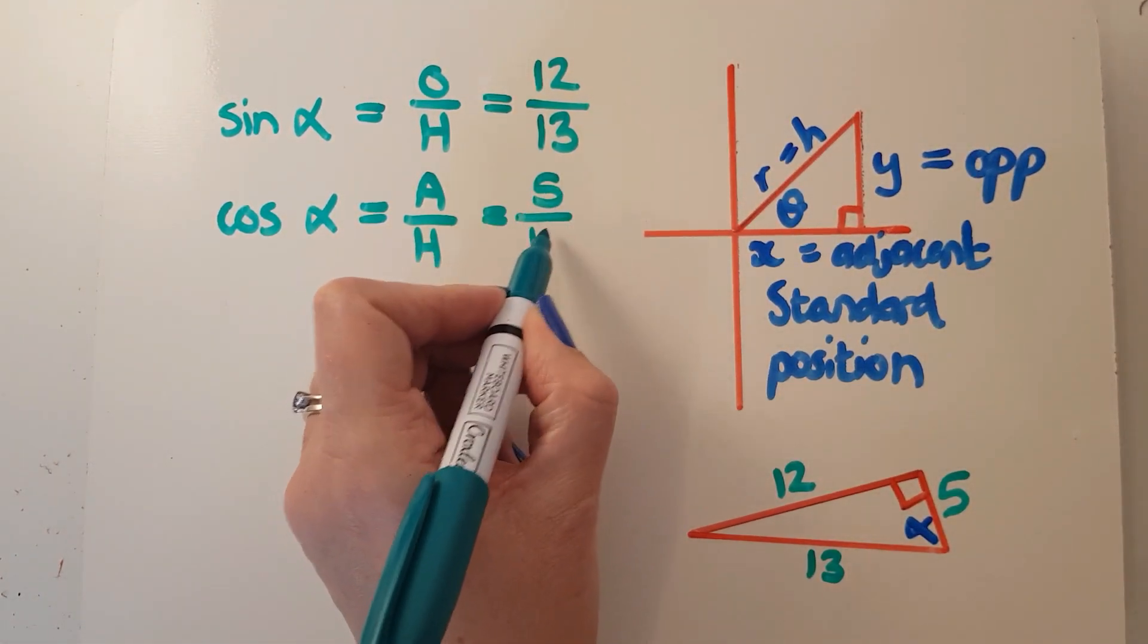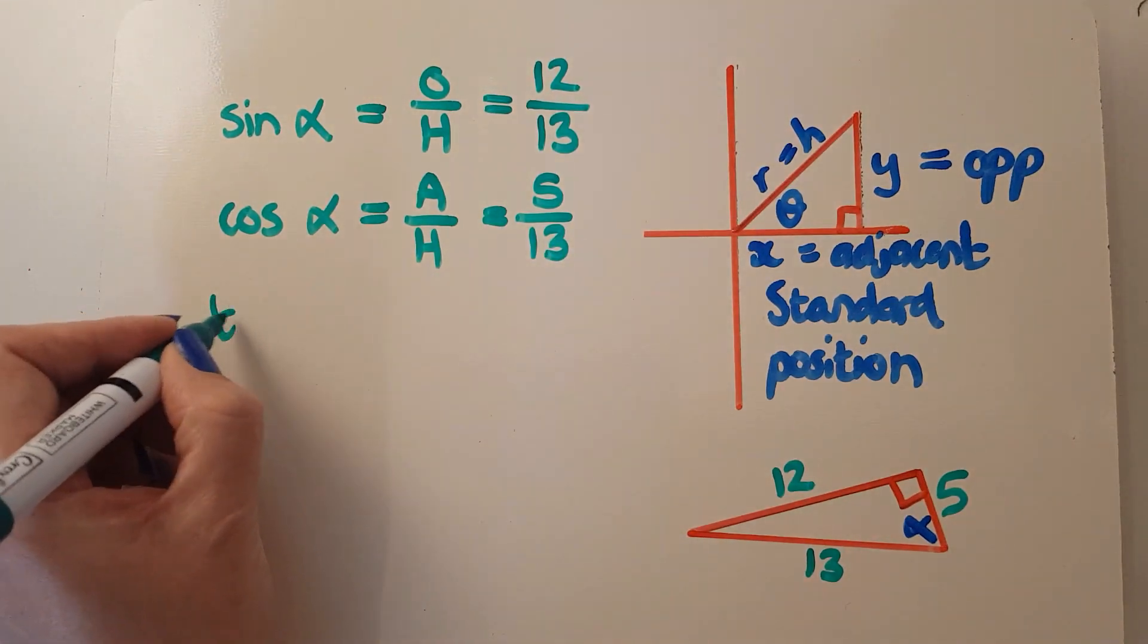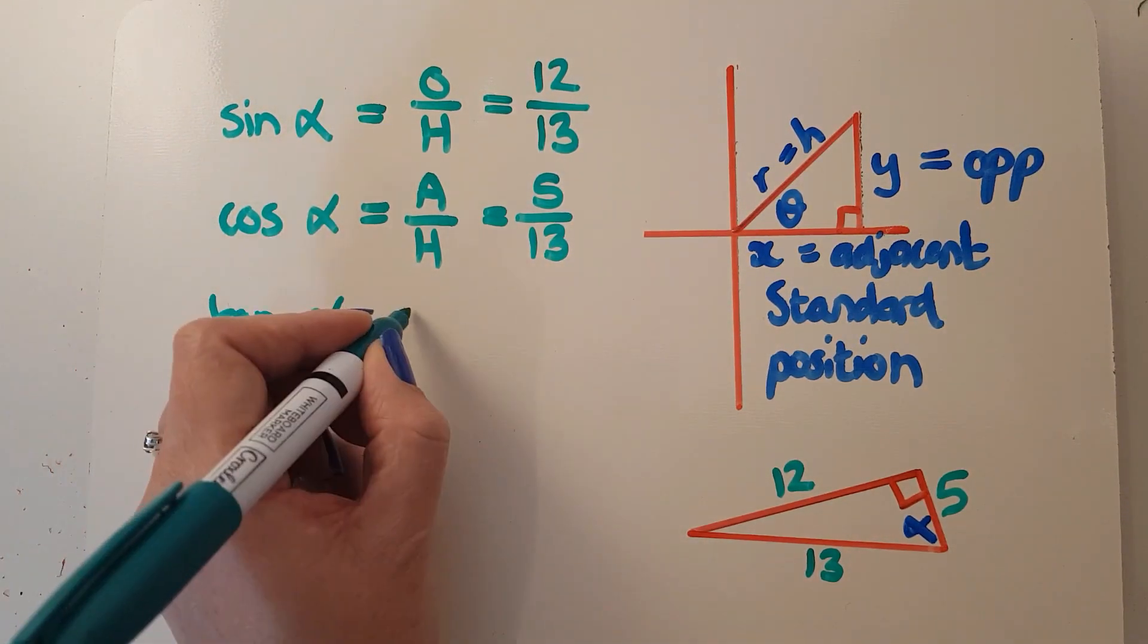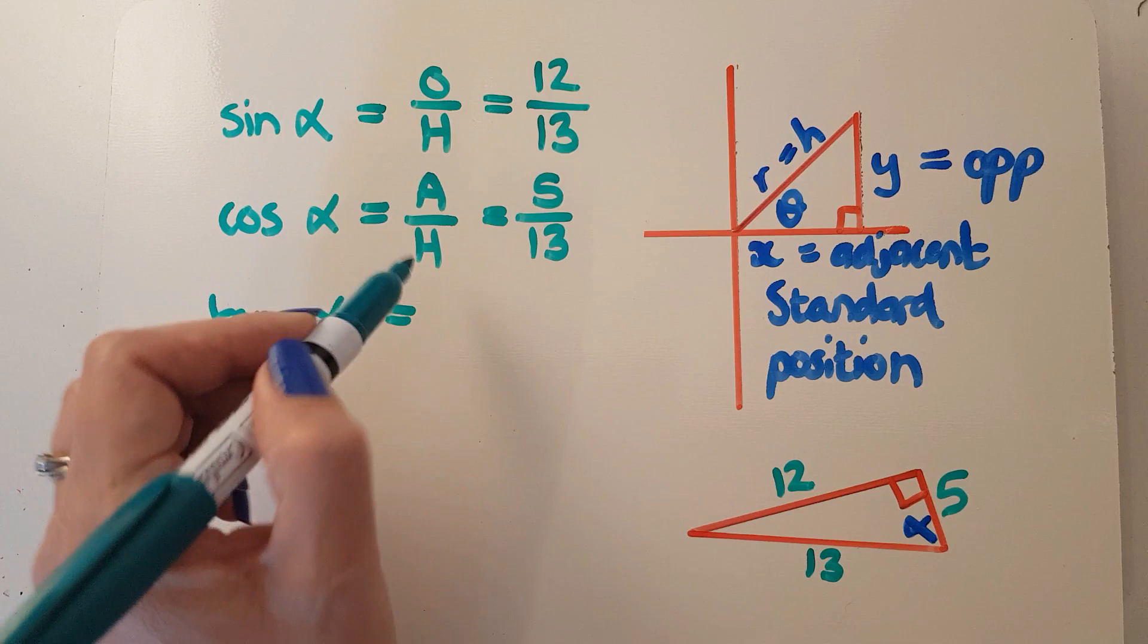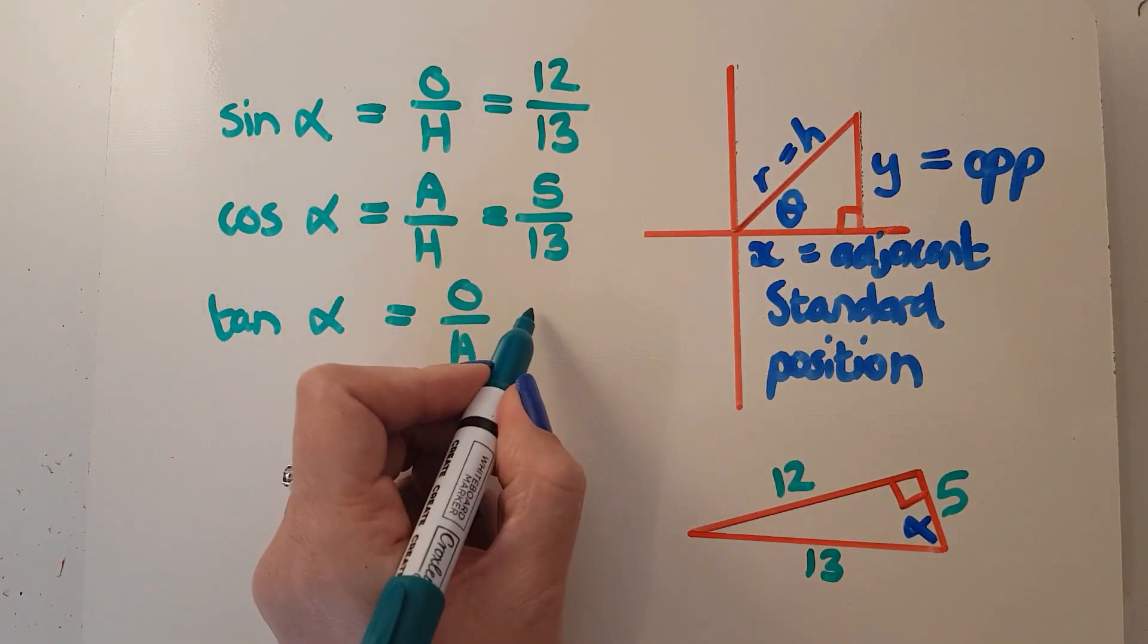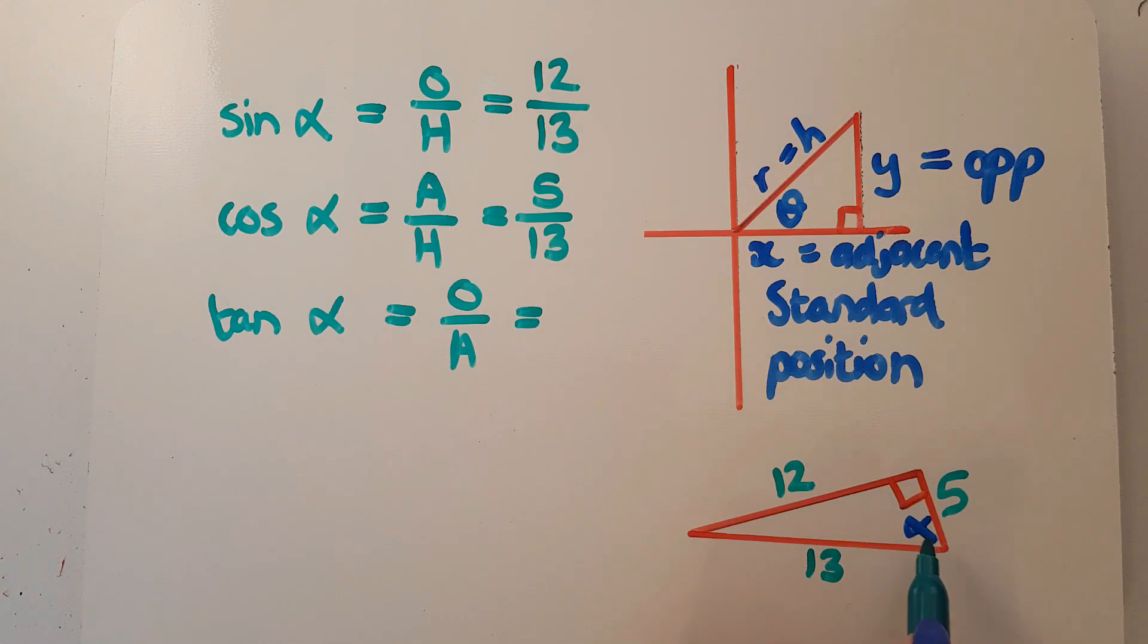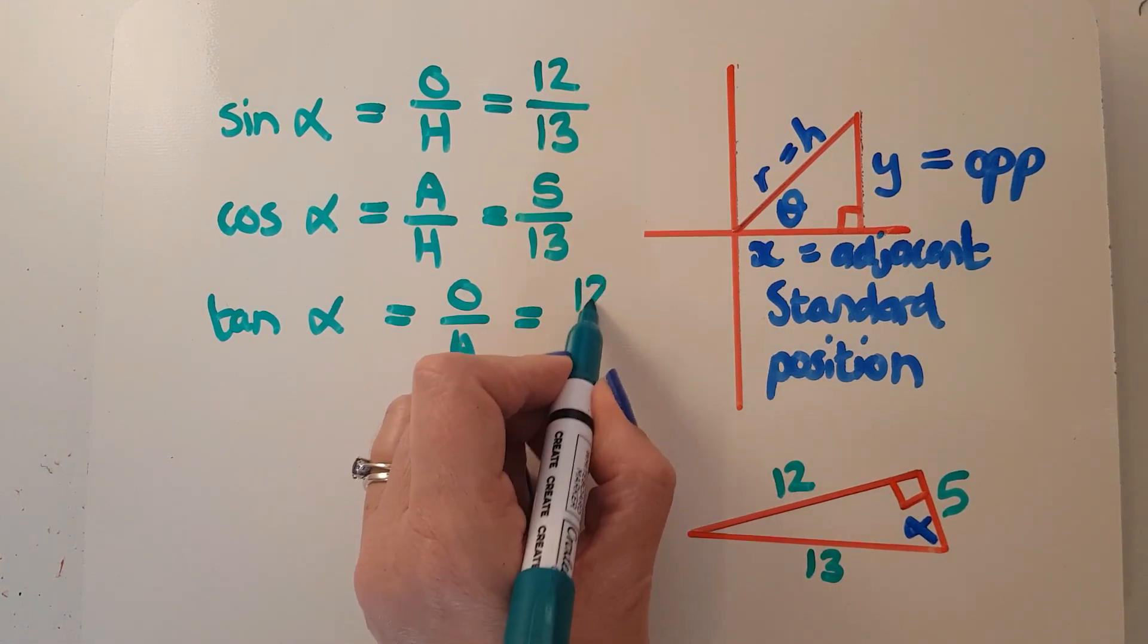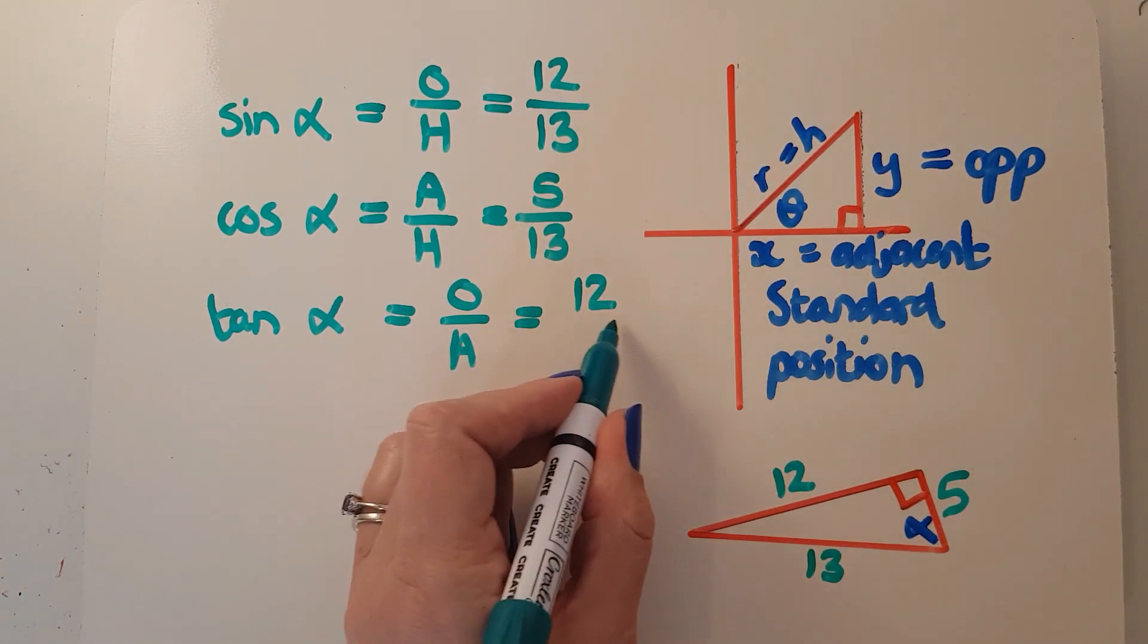And then my tan alpha, oh hell, another hour of algebra, even though it's trig. And my opposite to that one was 12, and my adjacent to that one is 5.